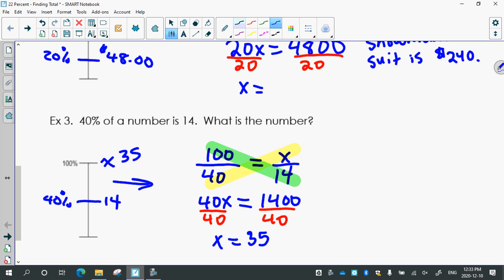So what is the number? Therefore, the number is 35. Finding the total.